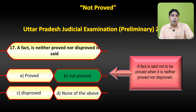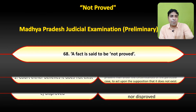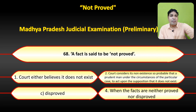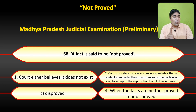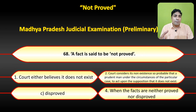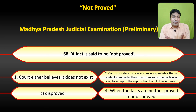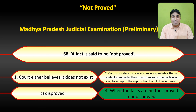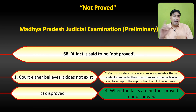Madhya Pradesh judicial examination prelim 2017 mein question poocha gaya: 'A fact is said to be not proved' — options: first, court either believes it does not exist — yeh ho gaya disproved; second, court considered its non-existence so probable that a prudent man under the circumstances of a particular case to act upon the supposition that it does not exist — yeh bhi disproved ke definition mein aayega; fourth option, when the facts are neither proved nor disproved — yahan par option 4 is the correct answer. Baaki ke jo teen options the — first, second, third — yeh teenon disproved ke hain, sirf fourth answer correct hai not proved se related.